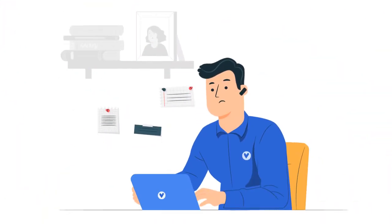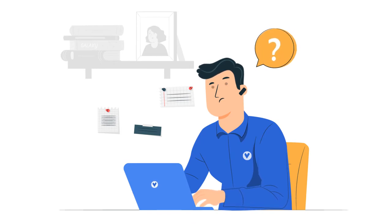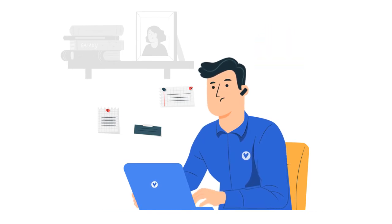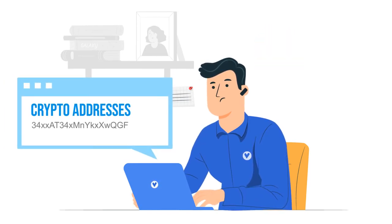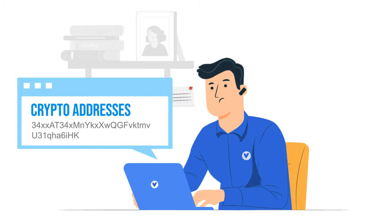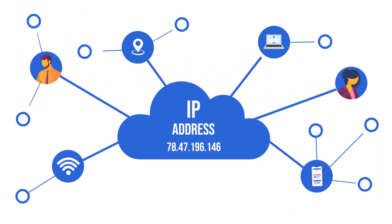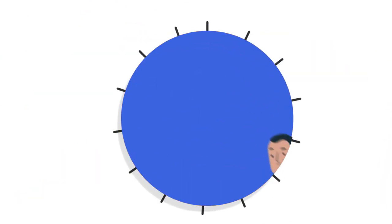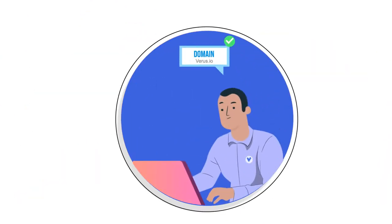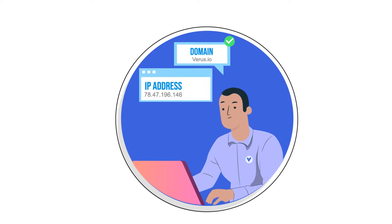One of the biggest barriers to using cryptocurrency for many new and old users is the cumbersome, long, and nonsensical crypto addresses that look something like this. Crypto addresses are really not designed with humans in mind. Just like nobody expects you to navigate the internet by using IP addresses, we use human-readable domains instead of having to use a number-based IP address. Veris ID solves this problem.